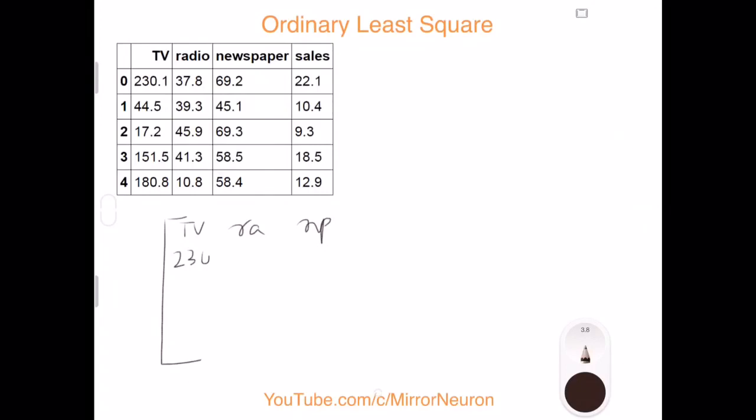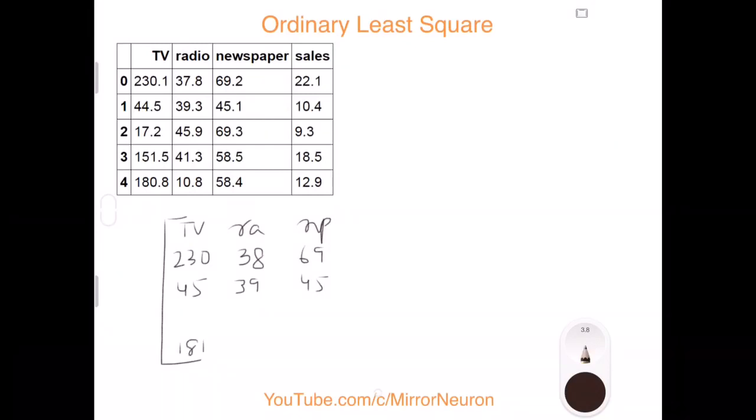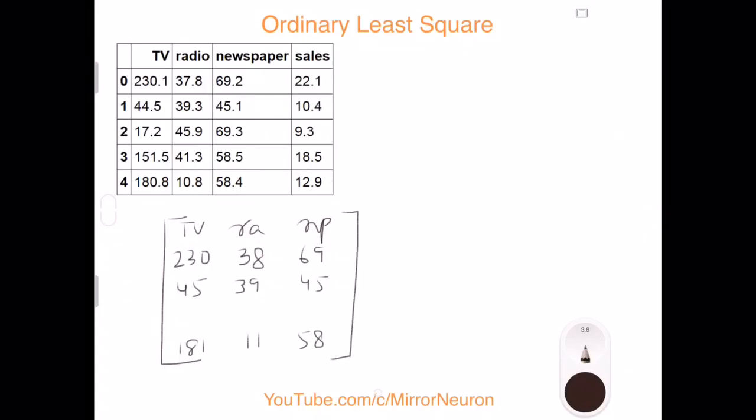So I have a big matrix here with TV, radio, and newspaper. I have 230, then 38, then 69. Then I have 45, then 39, then 45, and so on. The fifth record is 181, 11, 58, and so on to 200 records we have. So this will be basically a 200 by 3 matrix at this point in time.